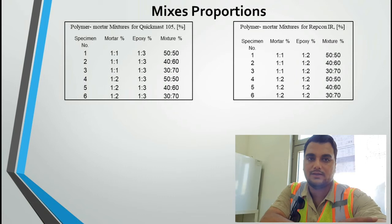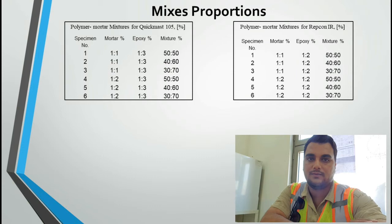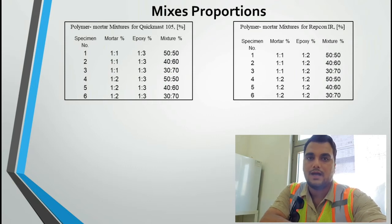The polymer used was epoxy, added to the mortar after mixing the resin with the hardener. The effect of curing was studied for both sets by preparing them at room temperature of about 25 degrees centigrade, with others post-cured at 50 degrees centigrade for 3 hours.